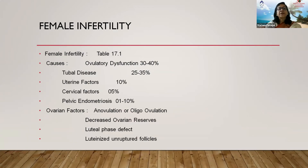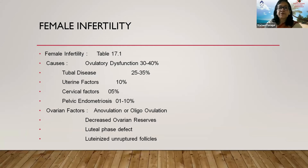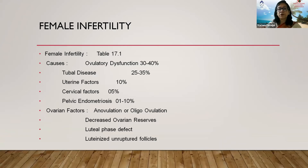For female infertility, the important causes are: ovulatory dysfunction at 30 to 40 percent, tubal disease at 25 to 35 percent, uterine factors at 10 percent, cervical factors at 5 percent, and pelvic endometriosis at 1 to 10 percent.